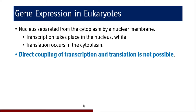Direct coupling of transcription and translation is not possible in eukaryotes because of the barrier of the nuclear membrane. mRNA has to be fully synthesized before protein biosynthesis starts — it is not coupled. In prokaryotes, however, there is no nucleus; transcription and translation take place in the same cellular compartment and translation is coupled to transcription. Even after only 20 to 30 base pairs of a 100 base pair transcript are synthesized, translation can already start in prokaryotes.